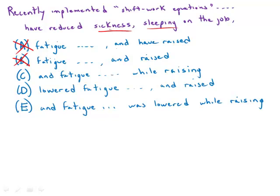Fatigue is the third and last term of the things that are reduced, so we need the word 'and' in front of it and we don't have it. Instead, we have 'and' connecting as if 'raised' or 'have raised' is in parallel. So A and B are out. C does have 'and fatigue' — perfect parallel structure — and then a nice contrast word 'while raising.' So C looks acceptable.